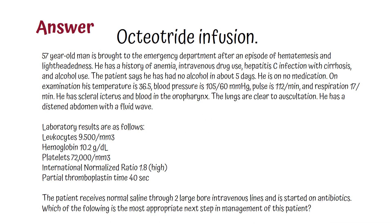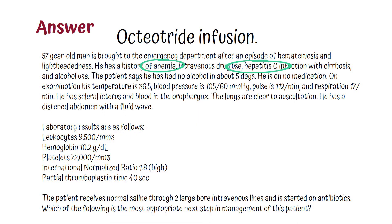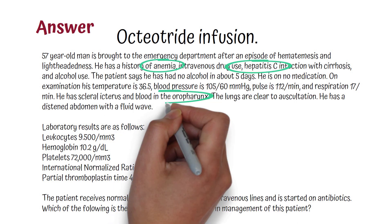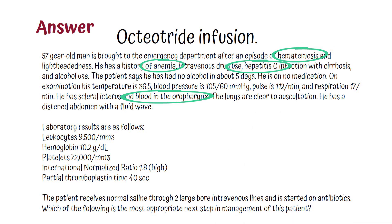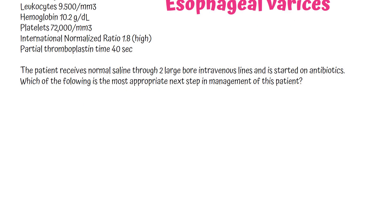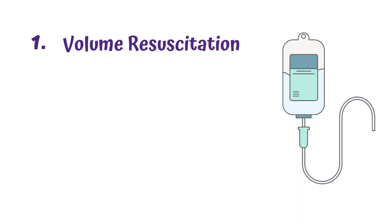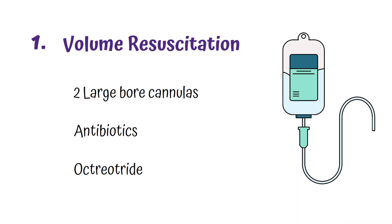This patient with hepatitis C infection and alcoholic liver disease most likely has esophageal varices, which is causing the upper GI bleeding. Initial treatment of variceal bleeding includes volume resuscitation with two large-bore IV cannulas, antibiotics, and octreotide.